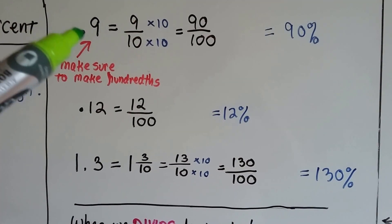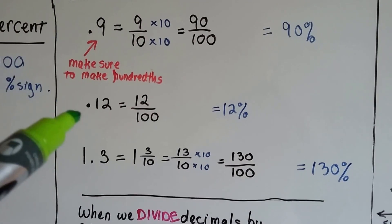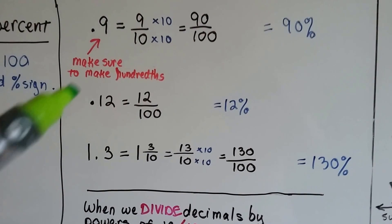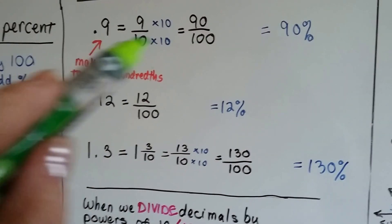Just make sure you pay attention that it's .09 or .90. It's got to be 100.